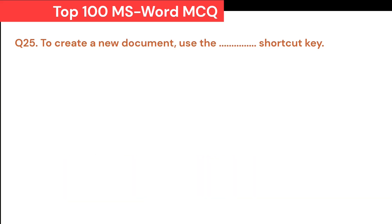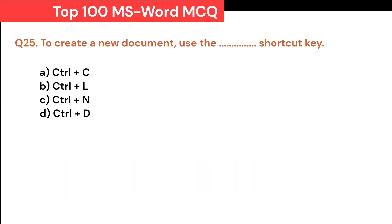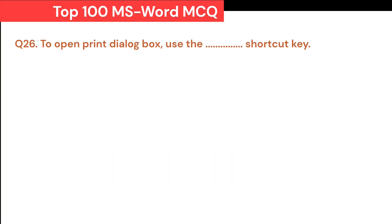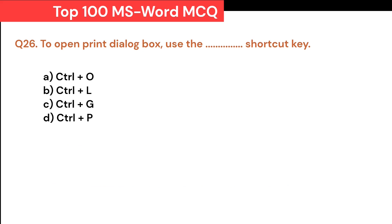To create a new document, use the Dash shortcut key: A. Ctrl+C. B. Ctrl+L. C. Ctrl+N. D. Ctrl+D. Correct answer is C. Ctrl+N. To open the print dialog box, use the Dash shortcut key: A. Ctrl+O. B. Ctrl+L. C. Ctrl+G. D. Ctrl+P. Correct answer is D. Ctrl+P.